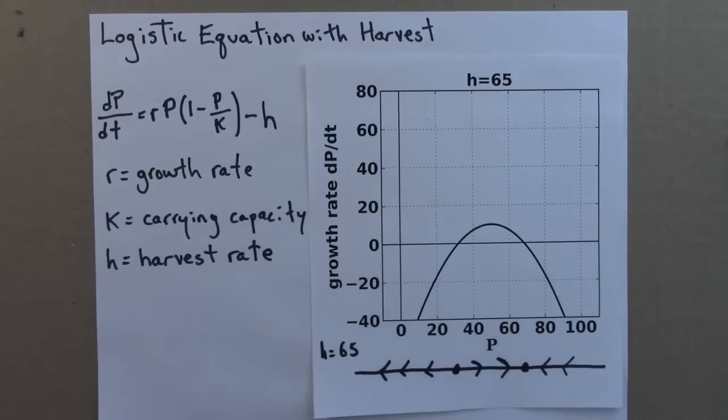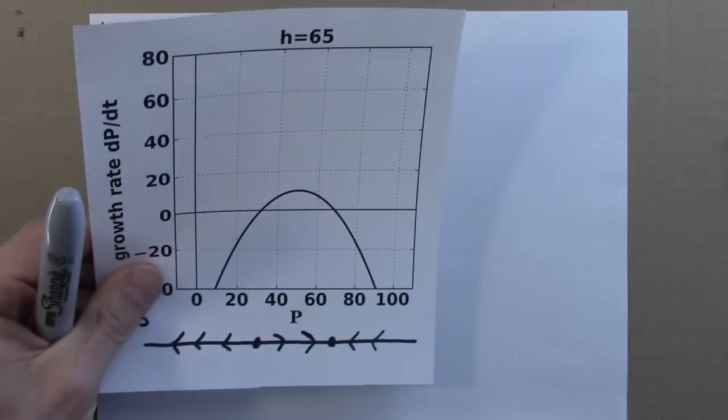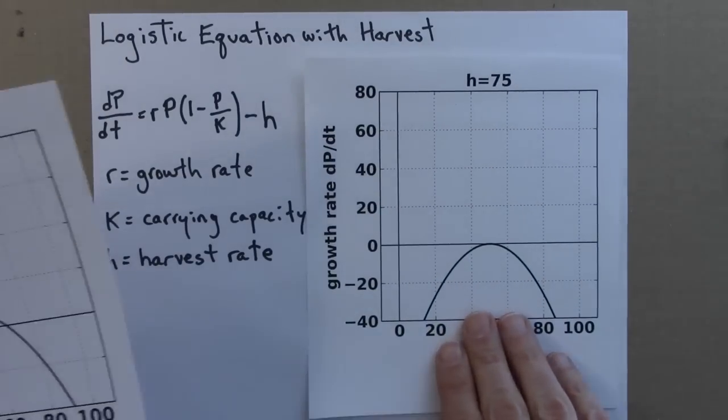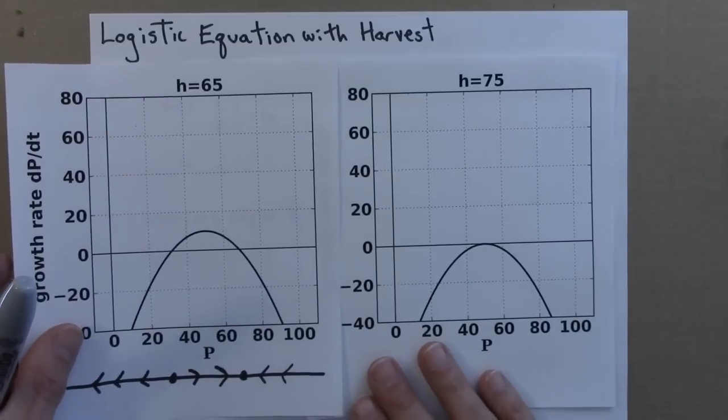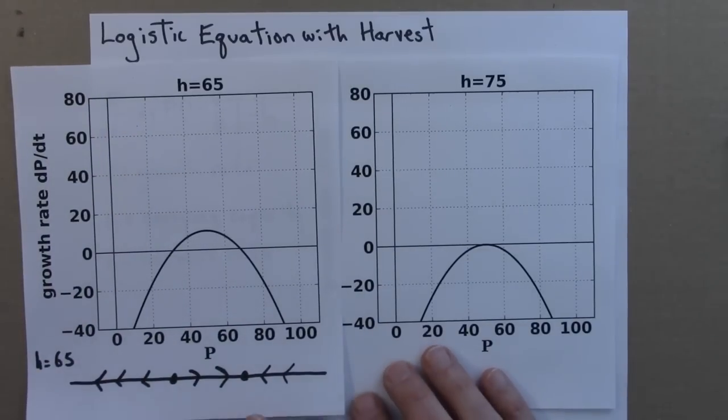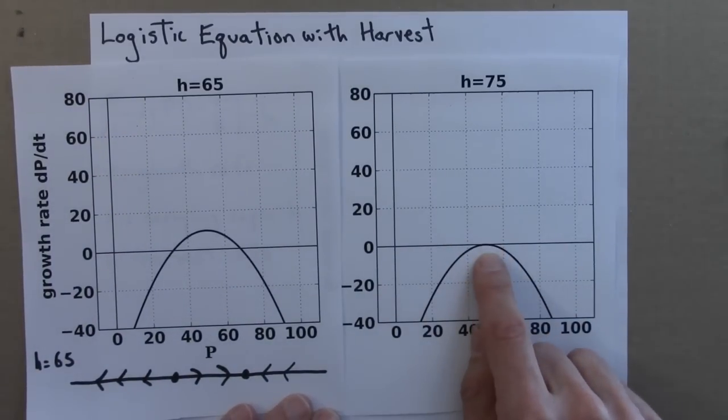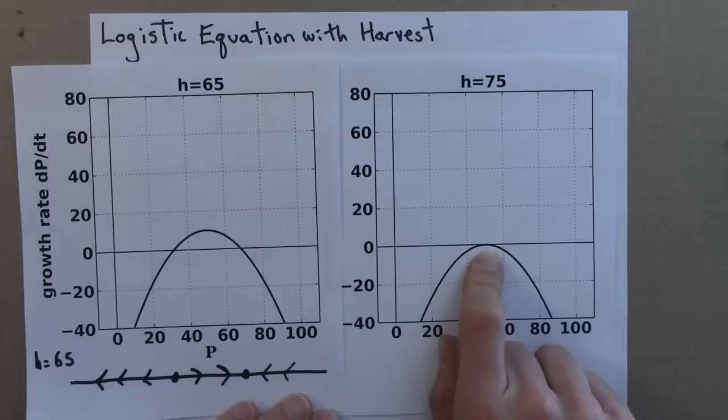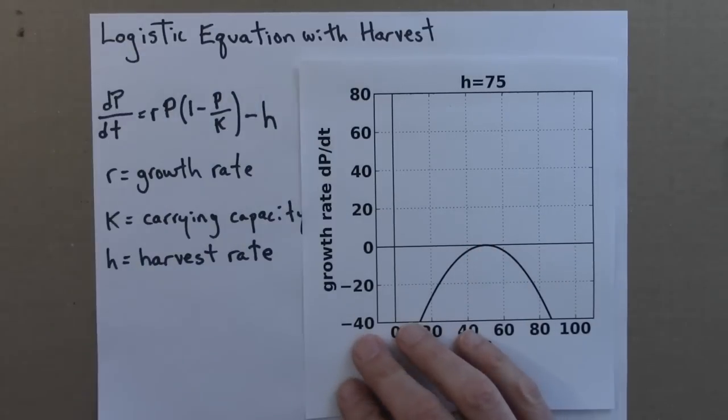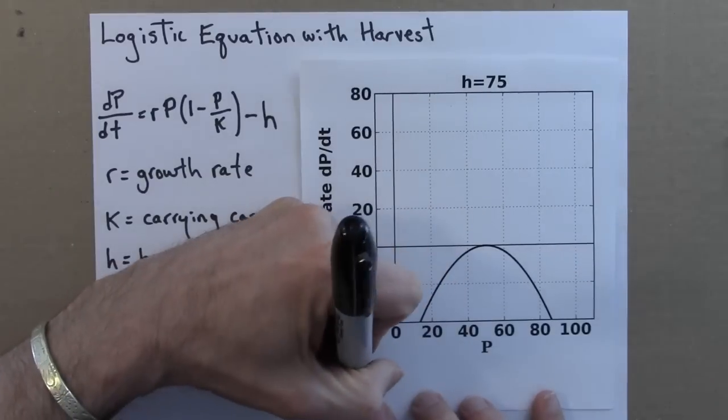Alright, I'll do two more h values. Next we'll do h equals 75. And this is an interesting one. Now the curve has been lowered enough, I'm subtracting enough fish every year, that it just barely touches this point here. So what might the phase line look for this, look like for this, and I'll draw the line in.